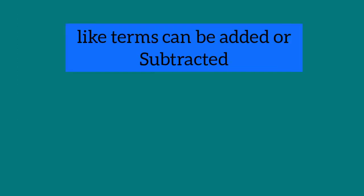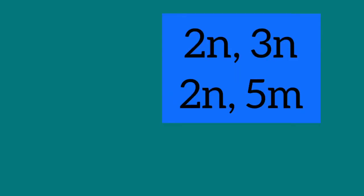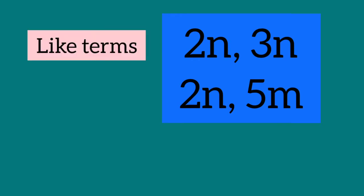In algebra, only like terms can be added or subtracted — sirf like terms ko add ya subtract ker sakte hain. Add like terms with like signs and subtract like terms with unlike signs. Look here: 2 and 3 are like terms, so when we add them, we add both of them together.